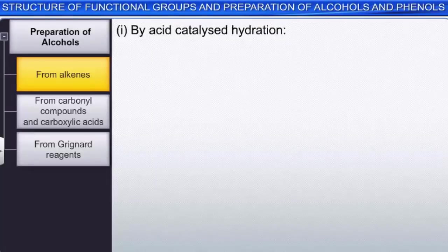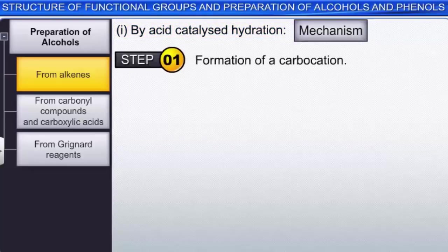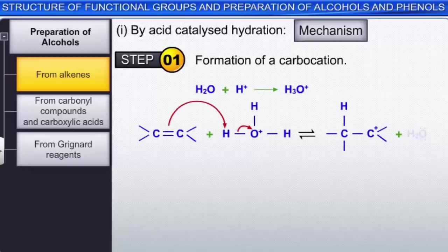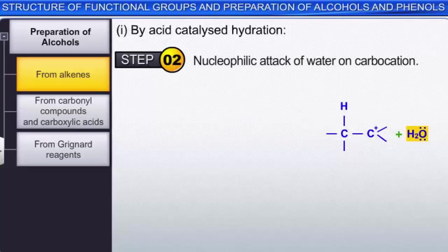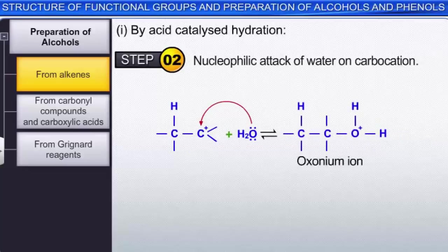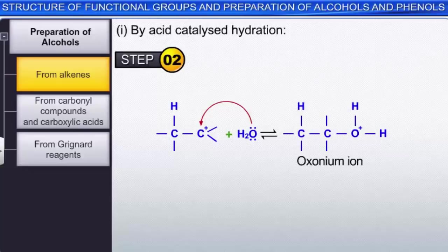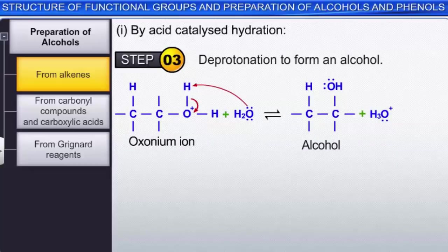The mechanism of acid-catalyzed hydration proceeds in three steps. Step 1: the carbon-carbon double bond is protonated to form a stable carbocation. Step 2: water, acting as a nucleophile, attacks the carbocation to form an oxonium ion. Step 3: the oxonium ion loses a proton to water (acting as a base) to form the alcohol product.